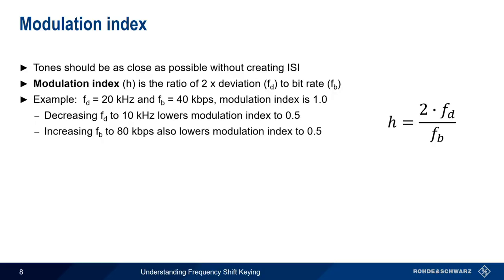Optimal detection of a received FSK signal occurs when the modulation index, H, is greater than 1. So generally, we choose our deviation and, by extension, the space between the tones for a given bitrate such that H is at least 1.